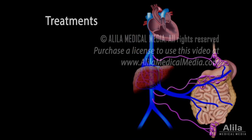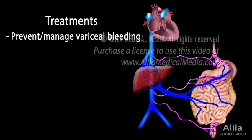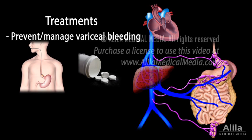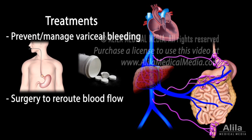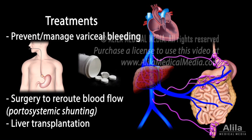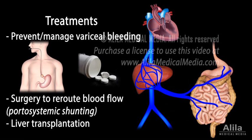Treatments aim to prevent and manage digestive tract bleeding, and include ongoing monitoring with endoscopy and a variety of drugs. If these fail, surgery to reroute blood flow may be performed. Liver transplantation may be needed in cases of severe liver damage.